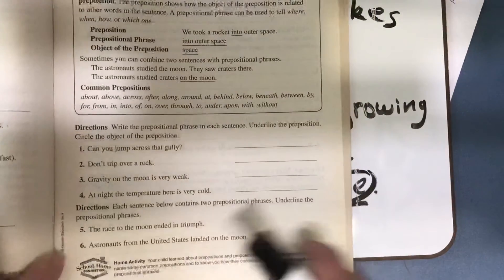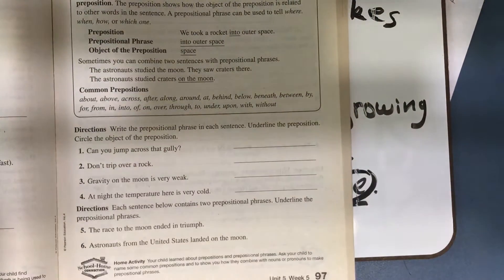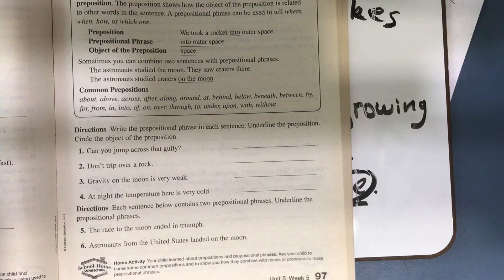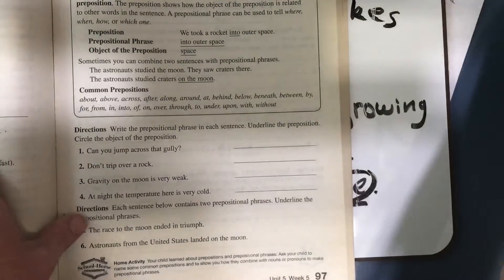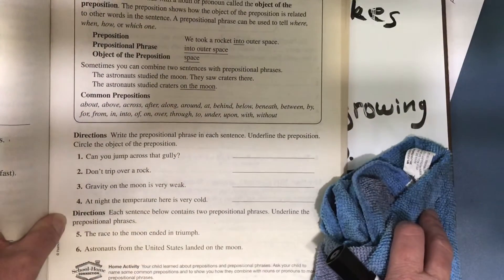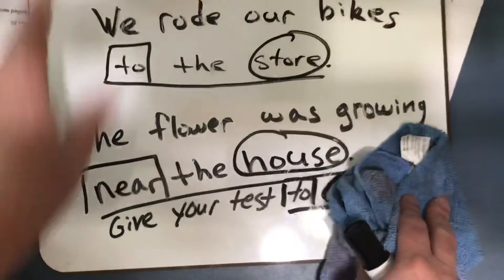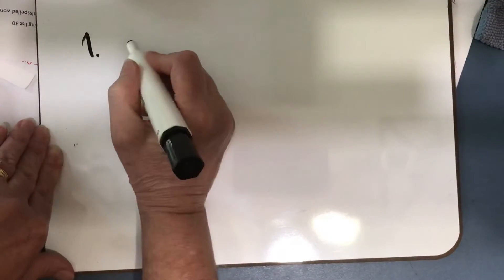So on page 97, it says write the prepositional phrase in each sentence, underline the preposition, circle the object of the preposition. Number one says, can you jump across that gully? All right, the prepositional phrase will be across that gully. That's what you will write on the line on page 97. Across that gully.